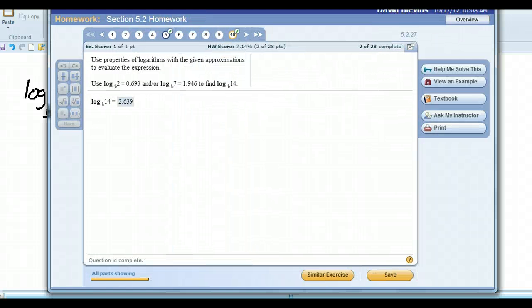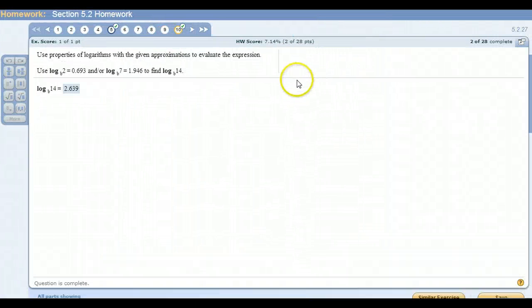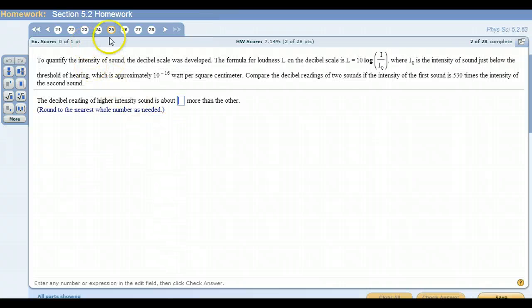All right. Now, this last one I want to show you, this is a monster one. This is a really kind of a tricky problem. All right. This is question 25 from the homework. And it says, to quantify the intensity of the sound, the decibel level was developed. The formula for the loudness is equal to this, all right, where I naught is the intensity of the sound just below the threshold of hearing, which is approximately this. Okay. First of all, you're not going to use this number at all. Okay. Compare the decimal readings of two sounds and the intensity of the first is 530 times the intensity of the second.